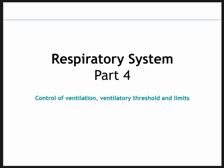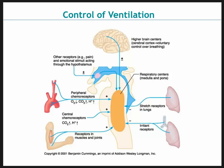Starting with part four, control of ventilation. This picture shows what the main control center is. The respiratory center is under the control of the medulla oblongata and the pons. The medulla is the primary center of control, and we'll look at what factors influence the medulla.